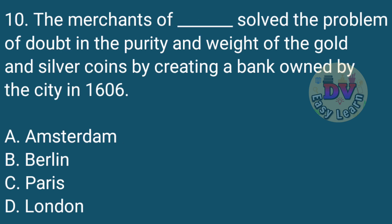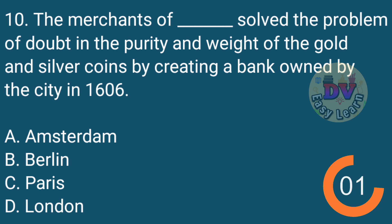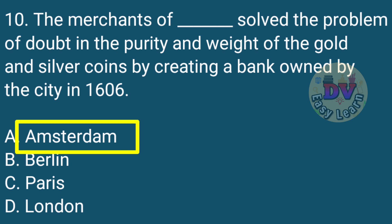Question No. 10: The merchants solved the problem of doubting the purity and the weight of gold and silver coins by creating a bank owned by the city in 1616. Correct answer: Amsterdam.